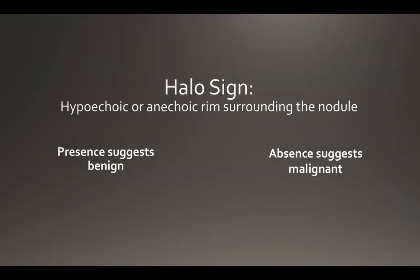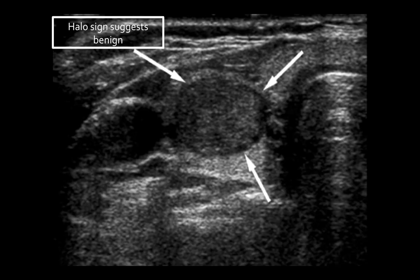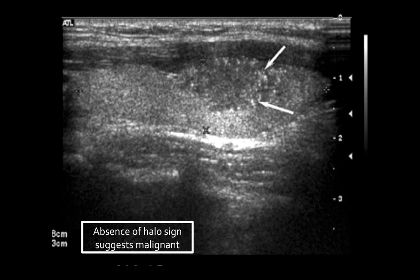The halo sign refers to a hypoechoic or anechoic rim surrounding a nodule. Its presence is often characteristic of benign nodules, whereas its absence can be concerning for malignancy. Here a nodule lies in the right lobe just medial to the carotid, and we can clearly see a hypoechoic rim completely surrounding the nodule — suggestive of a benign lesion. On the other hand, here we have a nodule that is hypoechoic, has punctate lesions, and there is no halo sign — this is very concerning for a malignant nodule.